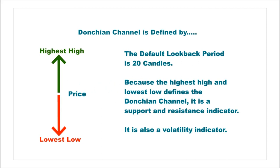Donchian channels were created by the father of trend following, Richard Donchian. The Donchian channel is defined by the highest high and the lowest low of an instrument's price over the past 20 candles. As such, the Donchian channel is a support and resistance indicator. It is secondarily a volatility indicator.